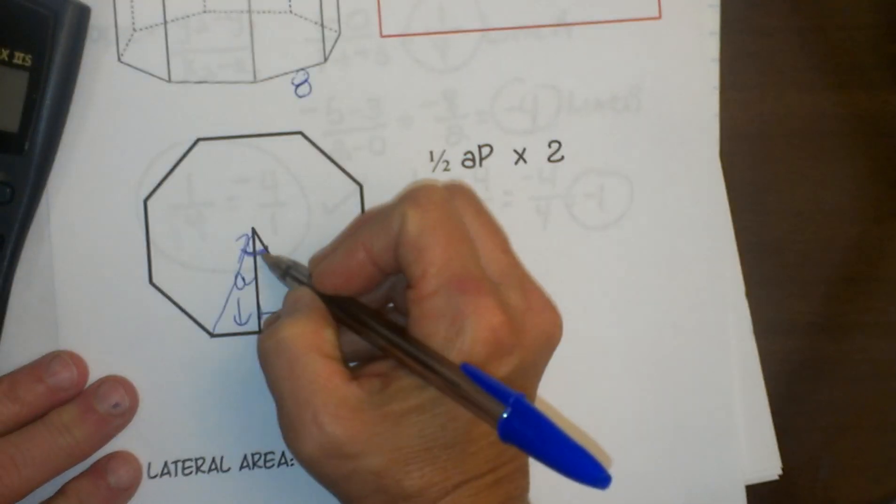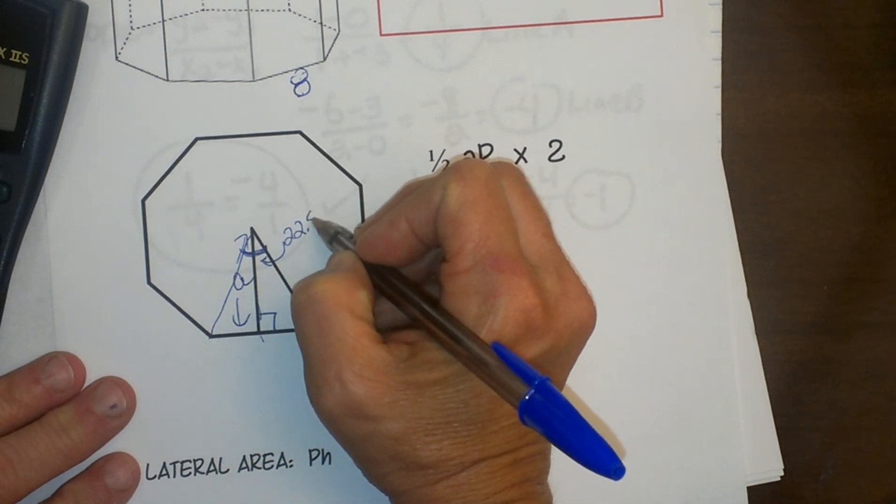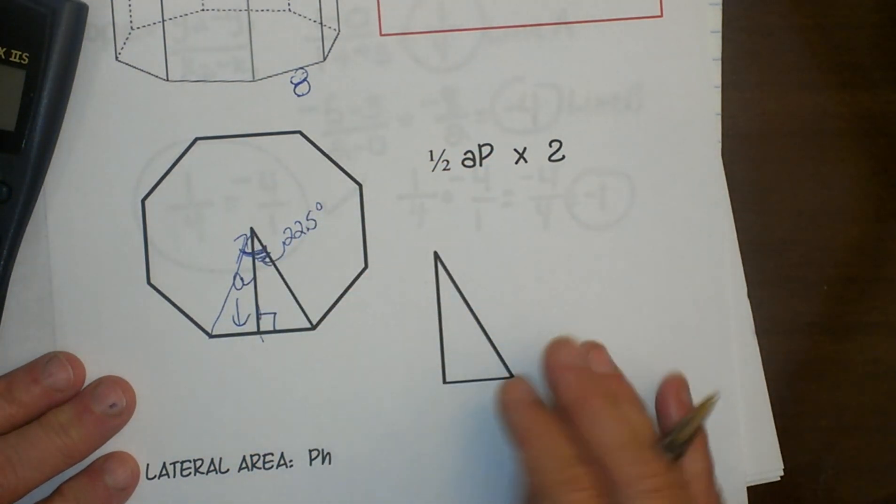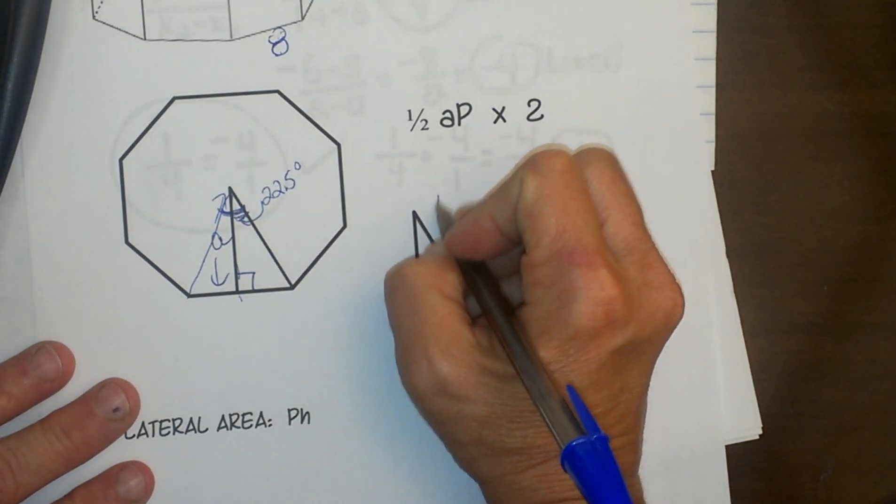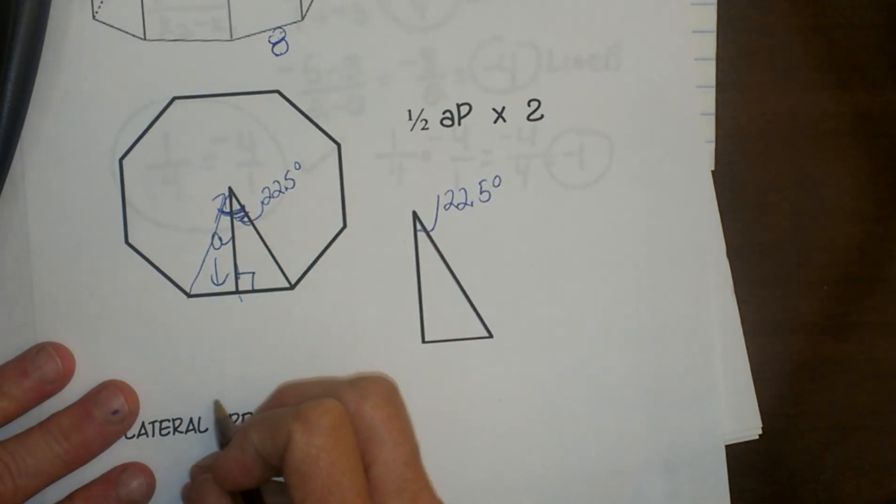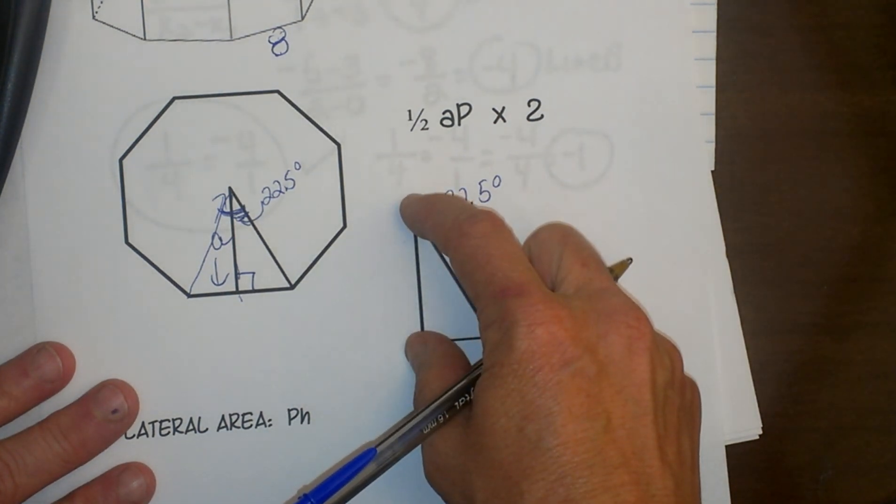But when I draw that apothem in, it cuts it in half, so the angle is 22.5 degrees. That's the angle we're going to be working with right here in our triangle. So let's draw in 22.5 degrees, and we have to get the base of this triangle and we have to use trig to figure out our apothem.